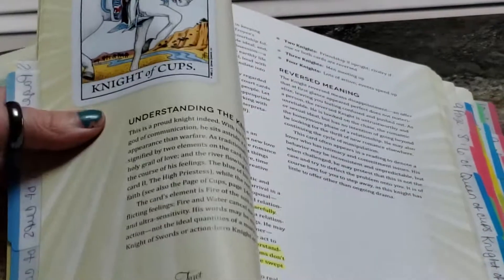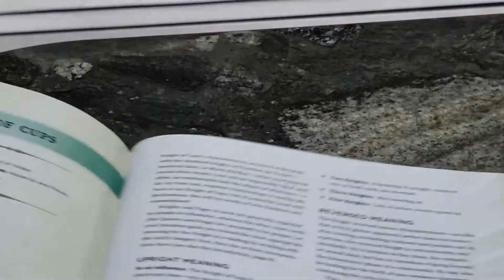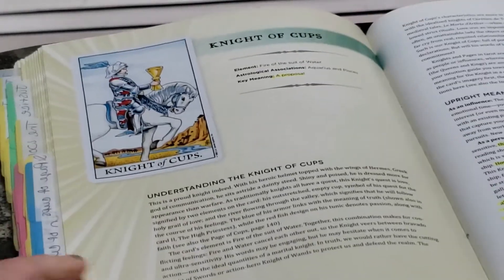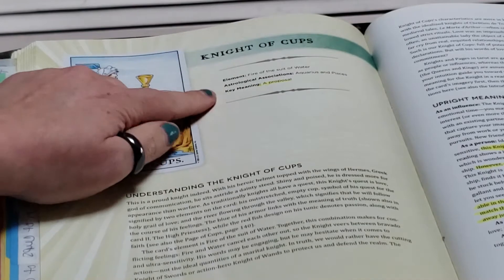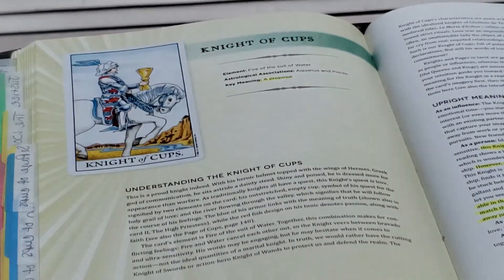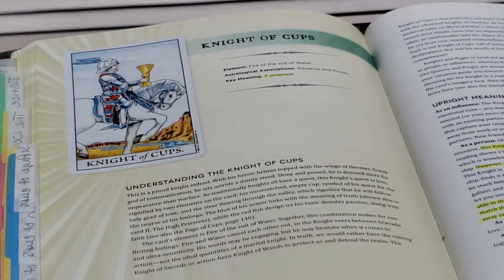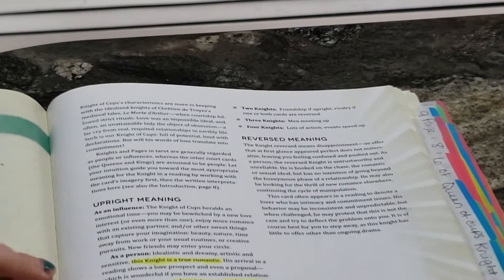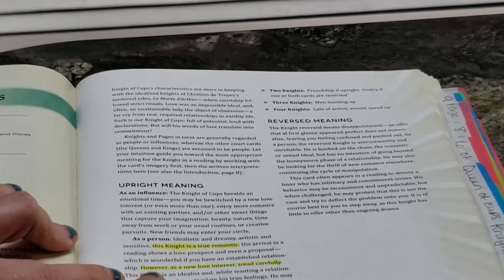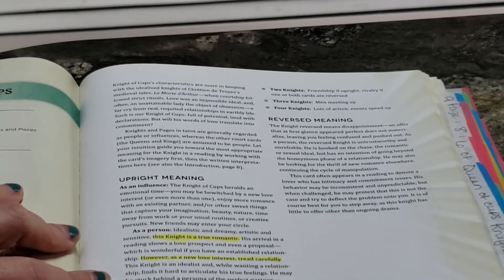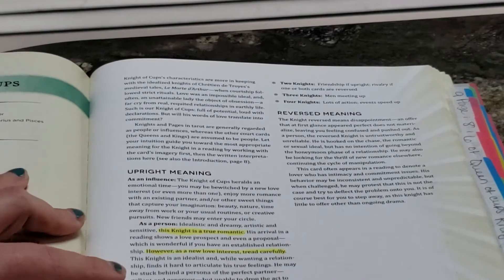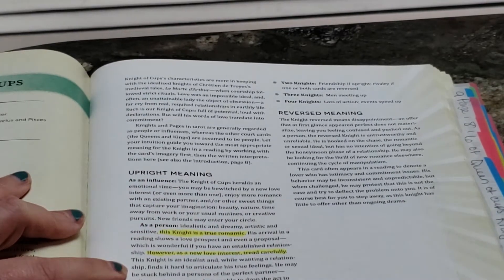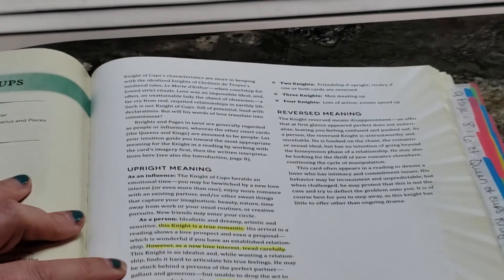And then if you have two, three, or four Aces. And then the reversal meaning. And that's it. It's only two pages for each Minor Arcana. Okay. And it's the same thing for everyone. And then if we flip to a court card. So now we have the Knight of Cups. Here's the Knight. Same situation. Understanding him. Element. Astrological association. Key meaning is a proposal. But it's funny because in the Romance Tarot that's not what it was talking about. It was talking about him being very charming. And then it gets into something similar over here. Upright meaning. He's a true romantic. However, if it's a new love interest, tread carefully.